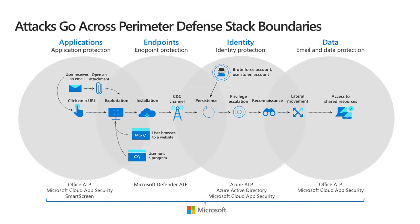To understand where Azure ATP fits into the broader Microsoft Threat Protection suite, it helps to look at a typical attack sequence — the kill chain. In most attack campaigns, attackers get their initial foothold by phishing the user. Say an employee received a malicious email and clicked on an attachment. The first line of defense here would be Office 365 ATP, leveraging URL and attachment detonation on an incoming email using things like safe attachments, safe links, and even Exchange Online Protection.